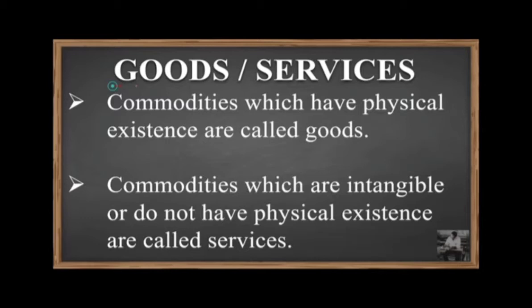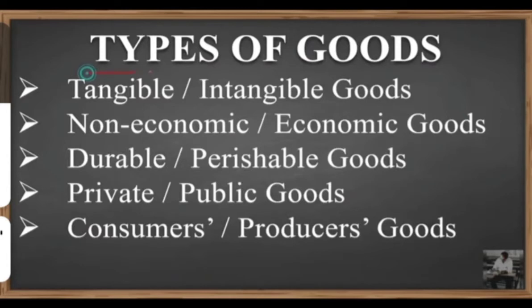After goods and services, we come to the types of goods. There are a total of five types of goods classified accordingly. The first type is tangible and intangible goods. Tangible goods are also called physical goods. In tangible goods, the goods which are visible, measurable, touchable, and where exchange is possible are called tangible or physical goods.